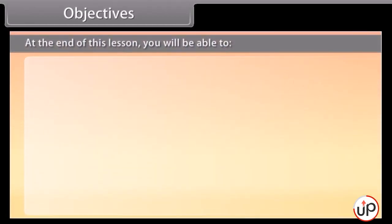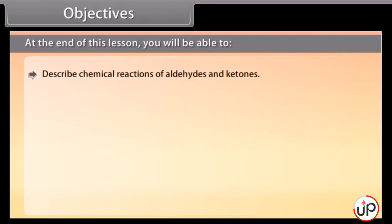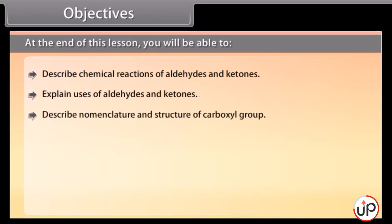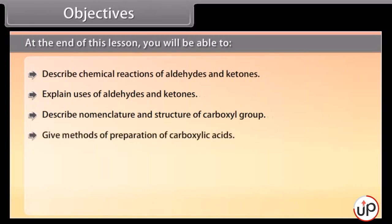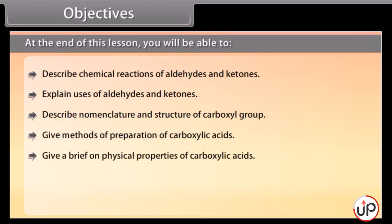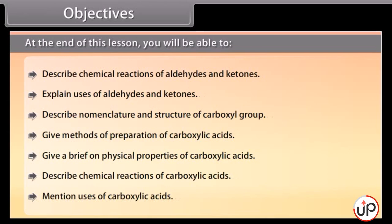At the end of this lesson, you will be able to: describe chemical reactions of aldehydes and ketones; explain uses of aldehydes and ketones; describe nomenclature and structure of carboxyl group; give methods of preparation of carboxylic acids; give a brief on physical properties of carboxylic acids; describe chemical reactions of carboxylic acids; and mention uses of carboxylic acids.